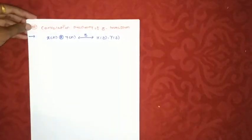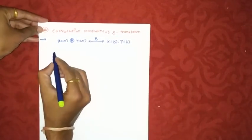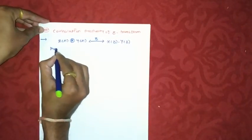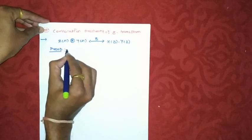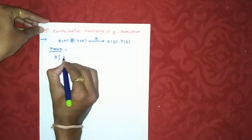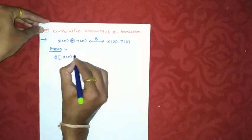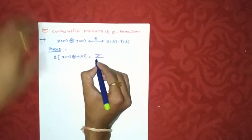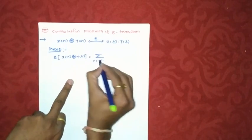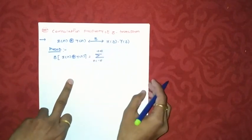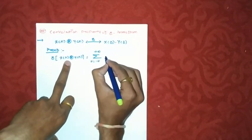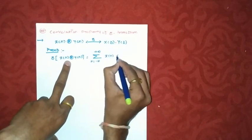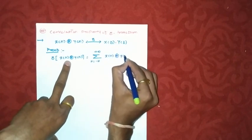Now let us try to prove this property. So for that case, I am writing it here. Z-transform of x of n convolved with y of n equals summation n from minus infinity to plus infinity. This is its convolution, x of n convolved with y of n.